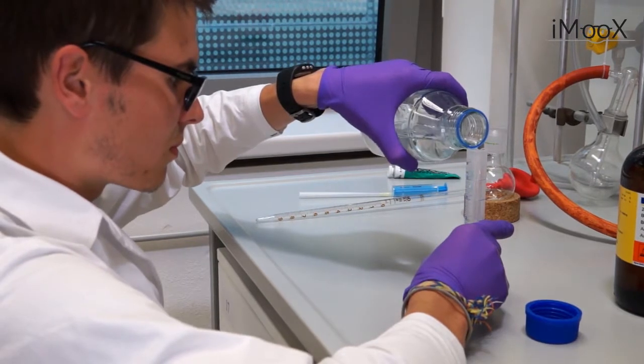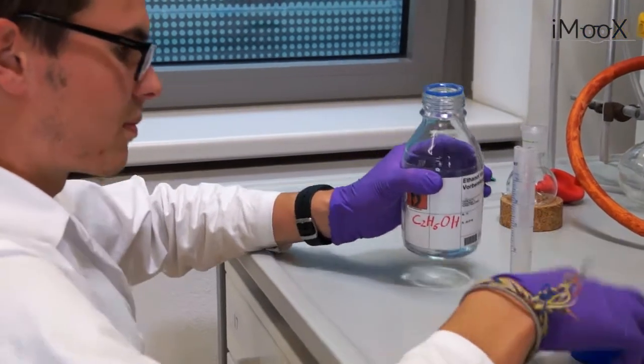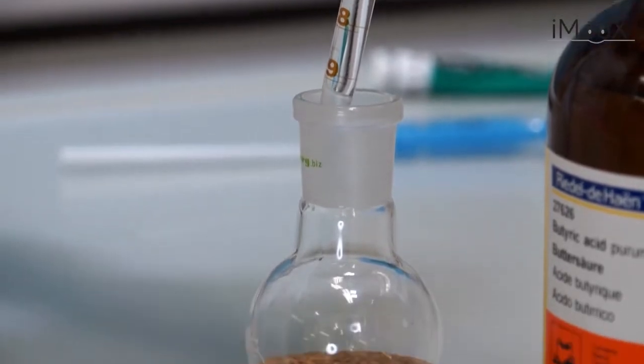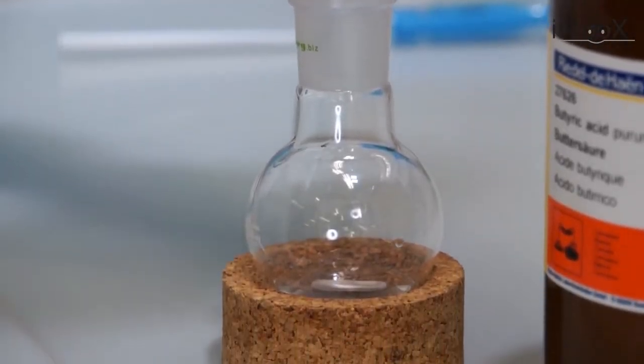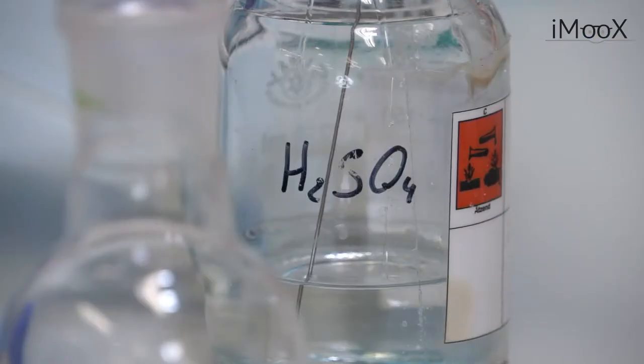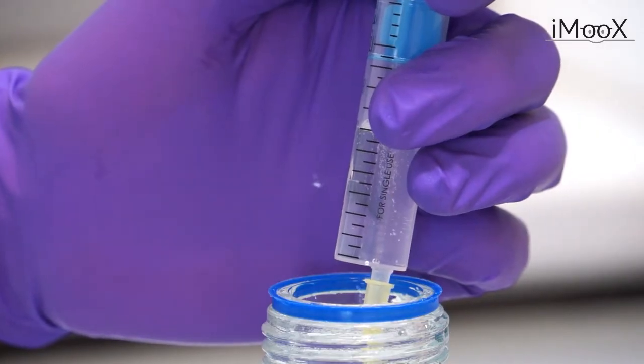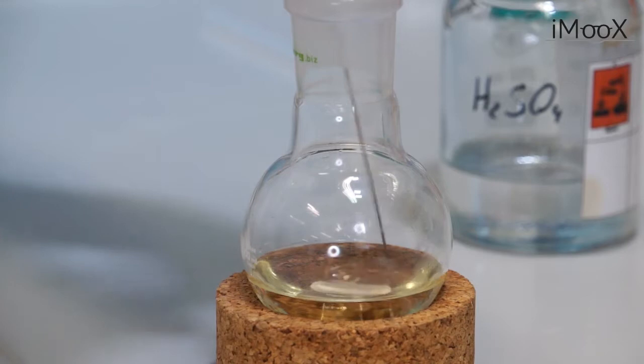Chris uses a measuring cylinder for the ethanol and the pipette and pipette aid to get exactly 10 milliliters of butyric acid. As for the sulfuric acid, due to its high density, Chris decides to use the syringe.